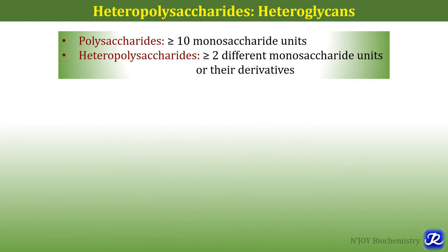Carbohydrates are classified as monosaccharides, disaccharides, oligosaccharides and polysaccharides. In polysaccharides, there are two types: homopolysaccharides and heteropolysaccharides. Polysaccharides constitute more than or equal to 10 monosaccharide units, and heteropolysaccharides contain more than two different monosaccharide units or their derivatives. Heteropolysaccharides are also called as heteroglycans.